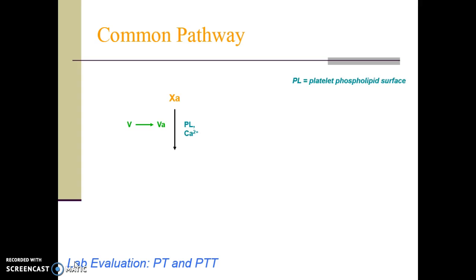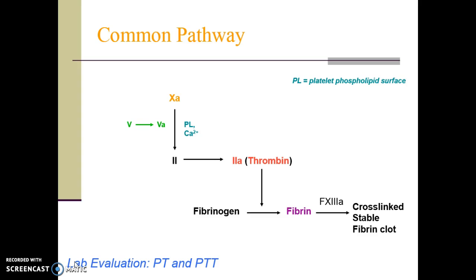The common pathway is where activated factor 10 and its cofactor, activated factor 5, result in the activation of factor 2, generating thrombin, also known as factor 2a. Thrombin is the key to secondary hemostasis because of its numerous roles. Thrombin activates the conversion of fibrinogen to fibrin, and it also activates factor 13 to cross-link and stabilize the forming fibrin clot. Not shown in this diagram, thrombin also directly activates factors 11 and 8 in the intrinsic pathway, and factor 5 in the common pathway through a positive feedback mechanism. Finally, thrombin also directly activates additional platelets. In the laboratory, the common pathway factors and their function are assessed by evaluating the PT and PTT tests in conjunction.